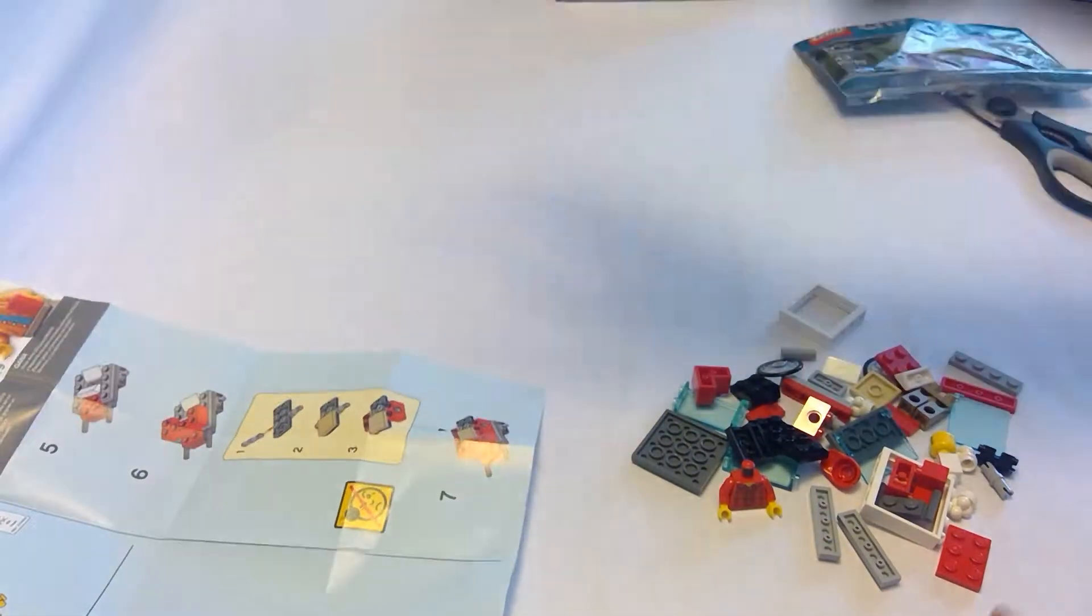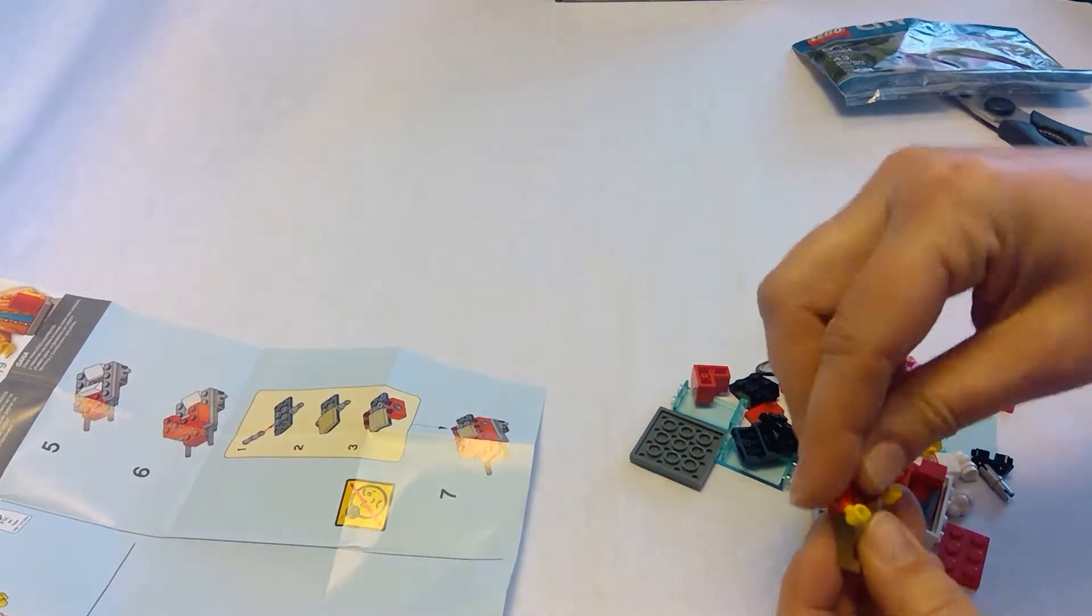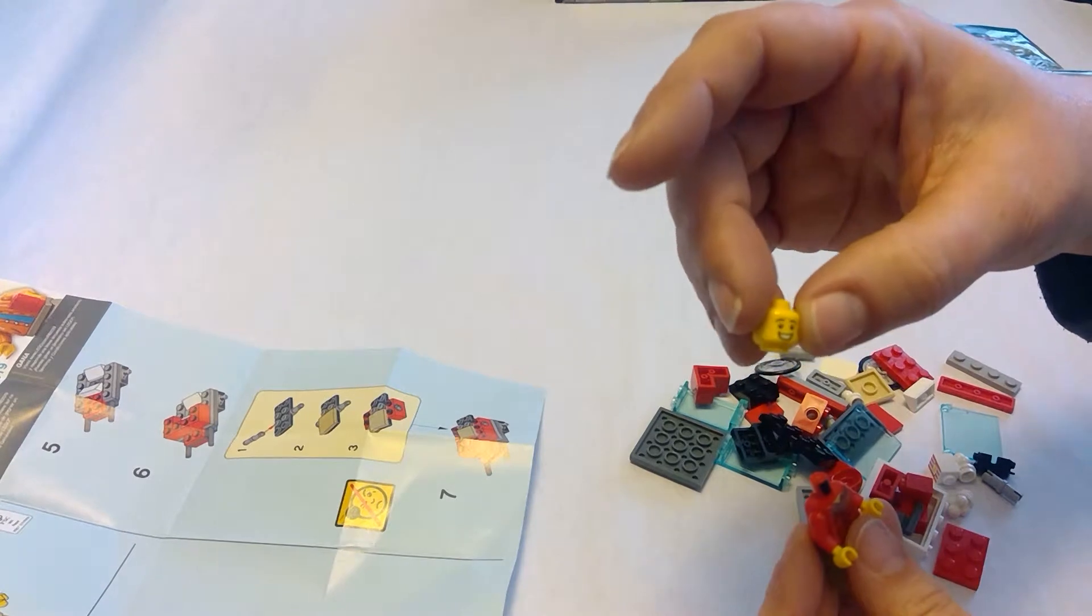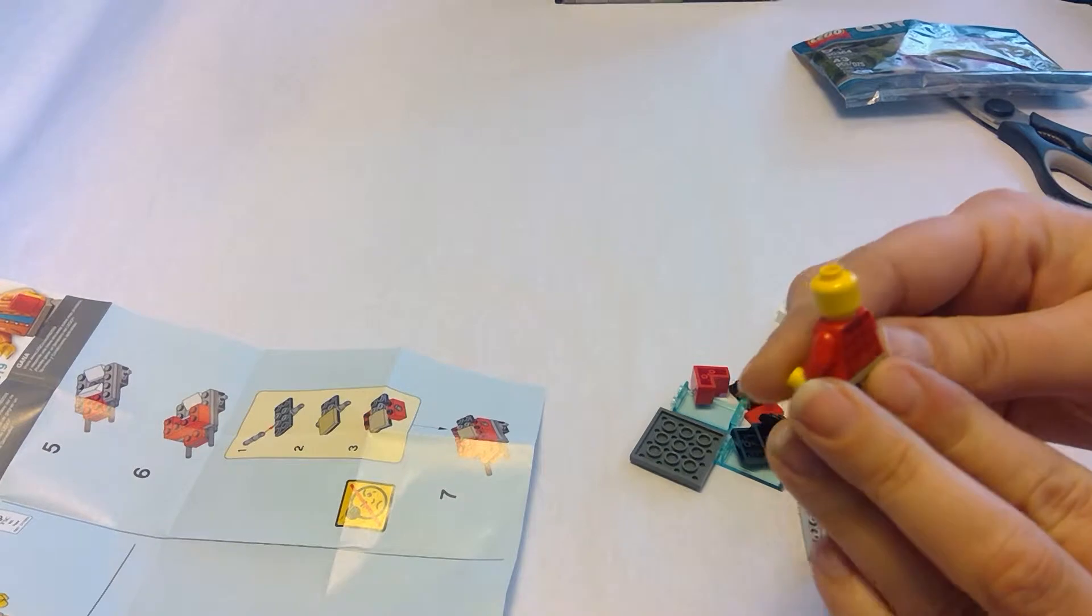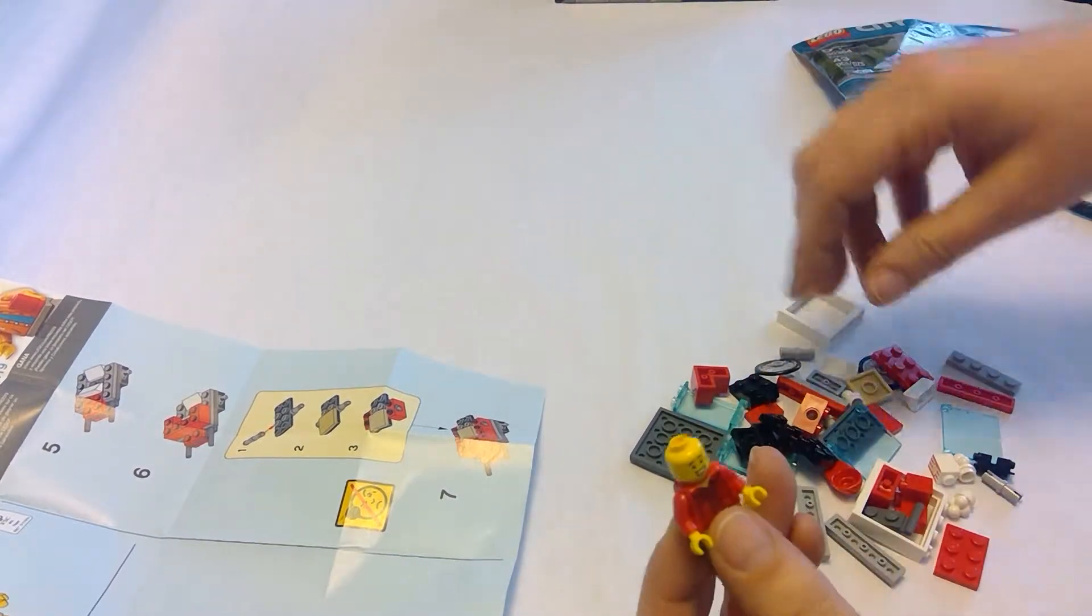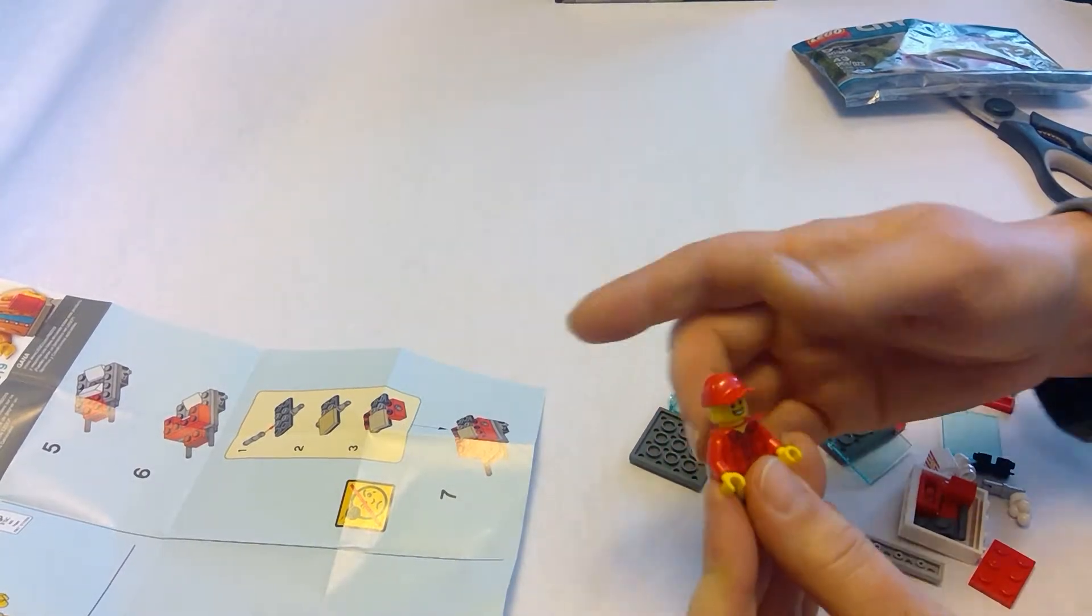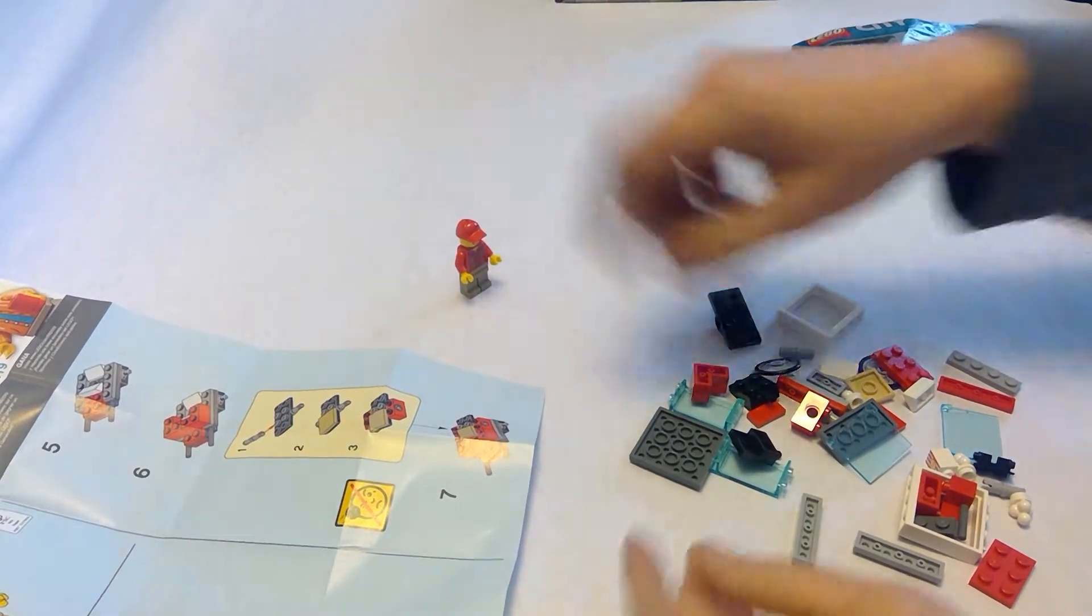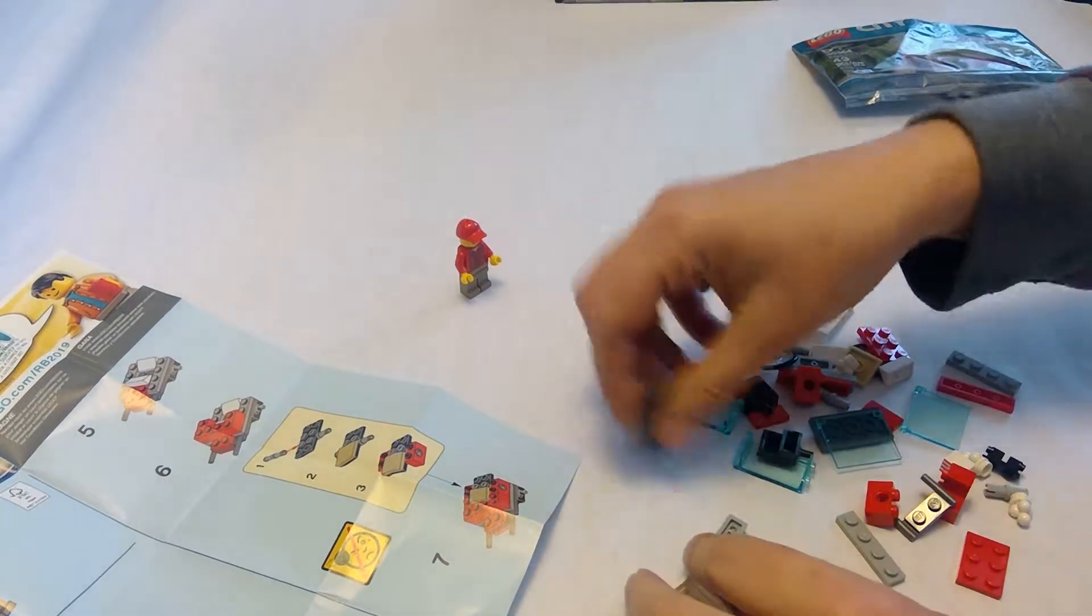I'm gonna start with the minifigure - I always start with them because they're my favorite part. Sometimes the minifigures have two-sided faces, but this guy just has one. That's okay though, because he's got this great big smile on his face. He's a pretty happy little guy with his baseball cap. Let's set him aside and get to work on the cart.